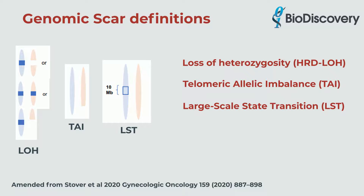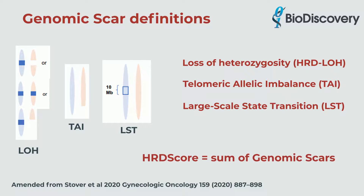Overall, the HRD score equals the sum of genomic scars. This means the calculation for HRD score is the number of regions of HRD-LOH plus the number of regions of TAI plus the number of LST breakpoints.